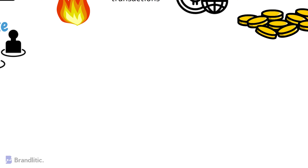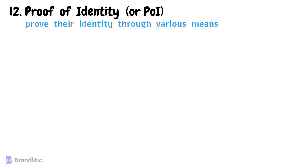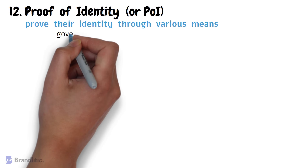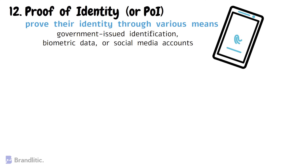Number twelve: Proof of Identity, or POI. In this consensus algorithm, network participants are required to prove their identity through various means such as government-issued identification, biometric data, or social media accounts. Only once their identity is verified, participants are allowed to validate transactions on the network and are accordingly rewarded with cryptocurrency.